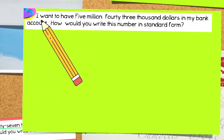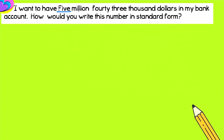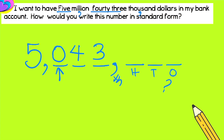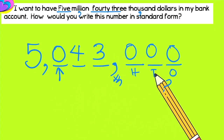For example, I want to have $5,043,000 in my bank account. How would you write this number in standard form? 5 million — just like that. Now in the thousands, we need three digits, but I only have 43, so I need to place a zero in the hundred thousands place. Then I place my comma — this is the thousands comma. I don't have any hundreds, tens, or ones, so I fill them with zeros. Let's read the number together: 5,043,000. And that's it.